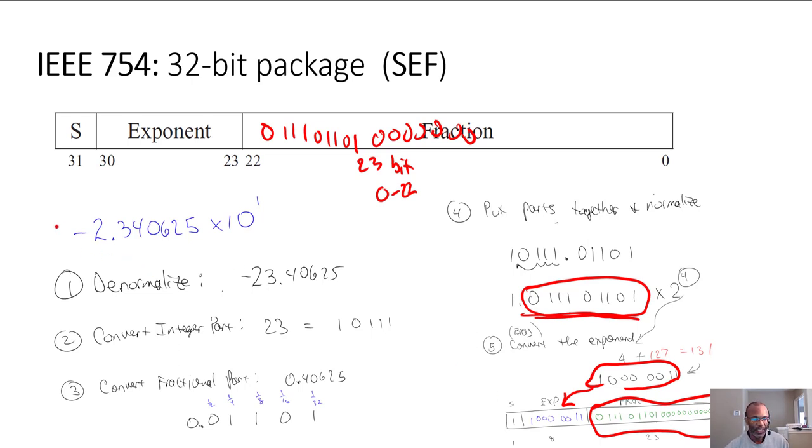And then since it's negative, our sign bit will be a one when the value that we're representing is negative, and our sign bit will be a zero when the value we're representing is positive. Now that is a quick summary of how we represent a value, how we place that into this 32-bit package using the IEEE 754 standard.